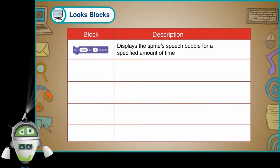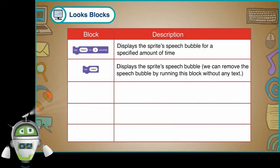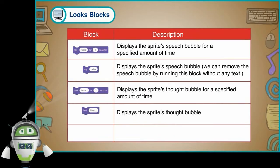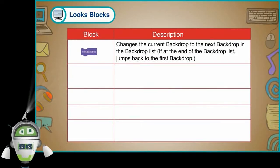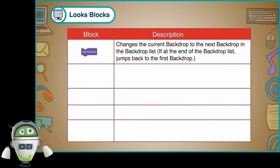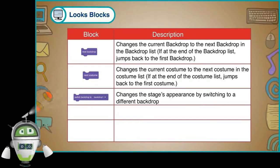Displays the sprite's speech bubble for a specified amount of time. Displays the sprite's speech bubble — we can remove the speech bubble by running this block without any text. Displays the sprite's thought bubble for a specified amount of time, and also the sprite's thought bubble. Changes the sprite's appearance by switching to a different costume. Changes the current backdrop to the next backdrop in the backdrop list; if at the end, jumps back to the first backdrop. Changes the current costume to the next costume in the costume list; if at the end, jumps back to the first costume. Changes the stage's appearance by switching to a different backdrop.